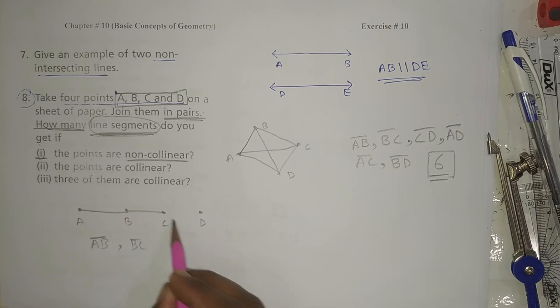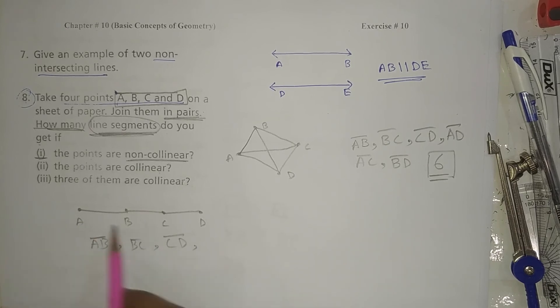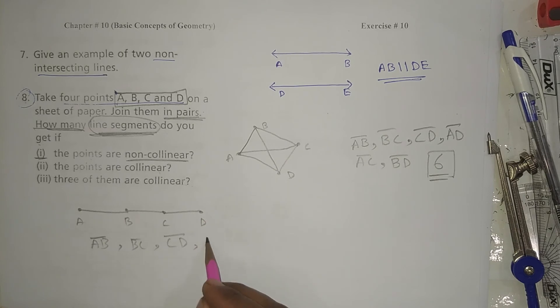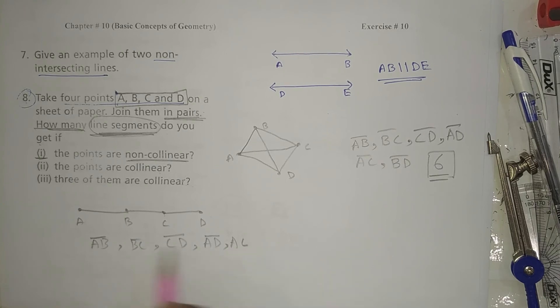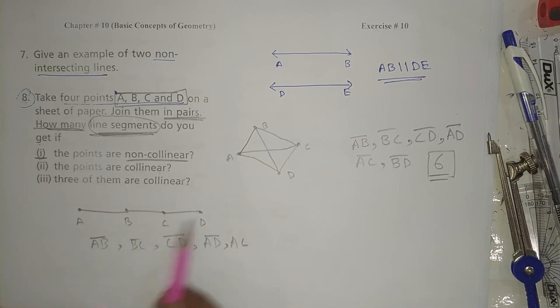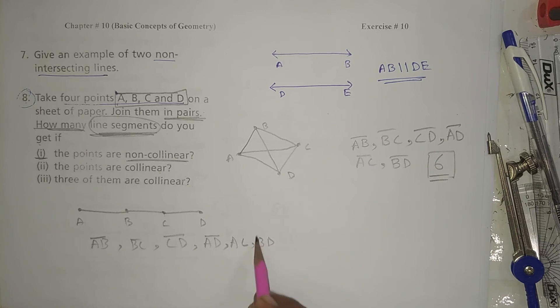So I can write A to B, AB, BC, and CD. And fourth one is, I can write AD. I can write AC. I can write BD.